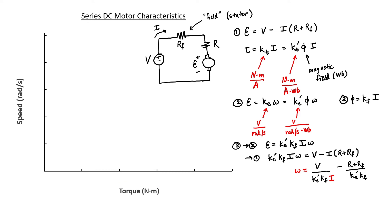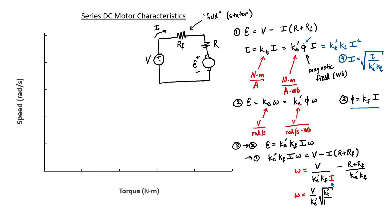Now let's derive the relationship between speed and torque for the same motor. Looking at our torque equation, if I substitute equation 3 into the torque expression I get a new equation: the torque depends on the square of the current — unlike the permanent magnet motor where torque was proportional to current. Substituting equation 4 into our speed equation gives the speed versus torque relationship. This is a nonlinear relationship. The motor will have a maximum torque where the curve crosses the x-axis, but as the torque becomes very low the speed increases quite significantly.